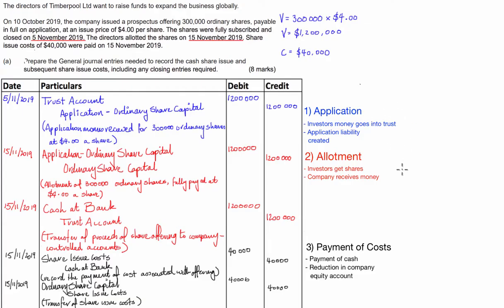So there you have it — those are the accounting entries required to record the issue of 300,000 shares at $4 a share, as well as the payment of the associated costs. Before I let you guys go, I'd like to go over the method I use to remember how to do these accounting entries in exams. With any kind of share issue, you've got to break it down into three different parts, which I've done with the colors here. The first part is the application of the shares, the second is the allotment, and finally the payment of the costs.